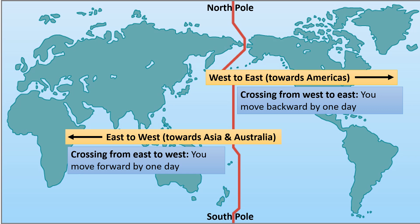Look at this picture. When you cross the international dateline from west to east towards the Americas, you move backward by one day. And when you cross the international dateline from east to west towards Asia and Australia, you move forward by one day. The international dateline helps standardize the transition of calendar days across the world by providing a clear demarcation for where one day ends and another begins.